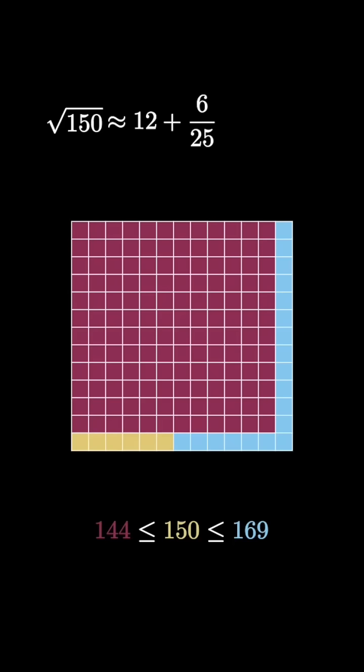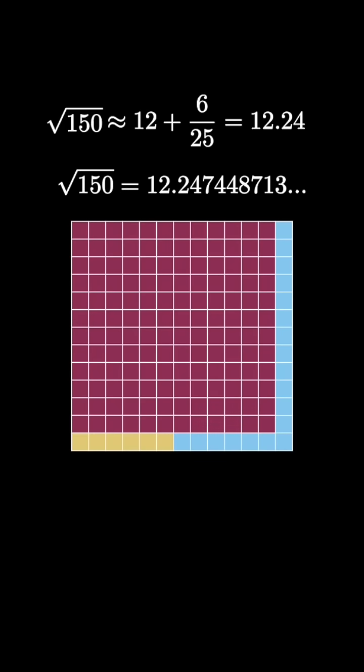So the square root of 150 is approximately 12 plus 6/25ths, which is equal to 12.24. The actual value of the square root of 150 is 12.247448 and so on, so the approximation is actually pretty close.